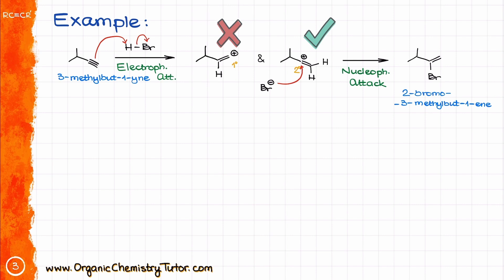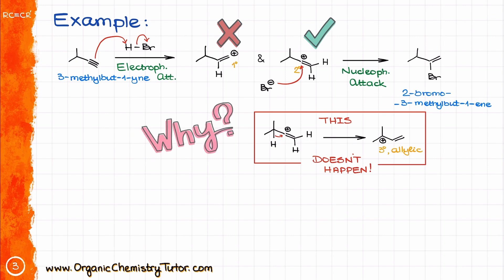After all, we know that if a carbocation can rearrange to give us a more stable carbocation, it's bound to happen. And like in this case, we should end up with a way more stable tertiary allylic carbocation. And yet, that does not happen. And you might also be wondering why, despite everything you've learned in your course, this is all of a sudden an exception. And we know that in chemistry there are no such things as exceptions. Everything has a reason.